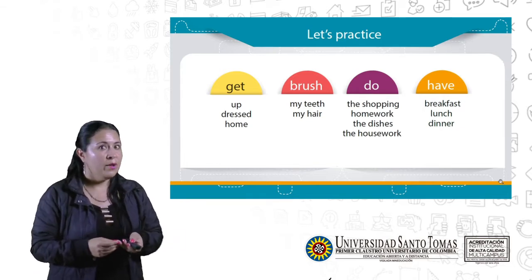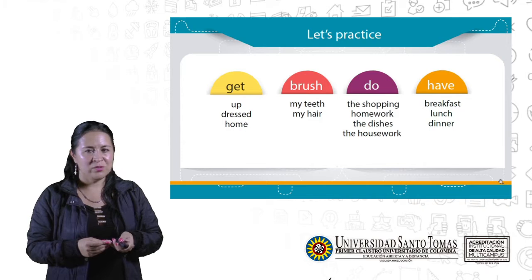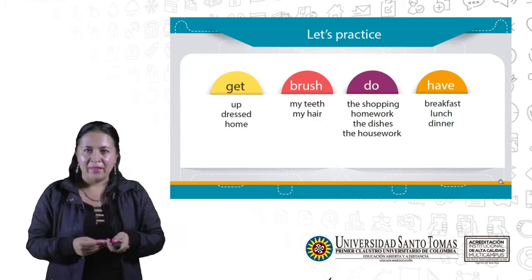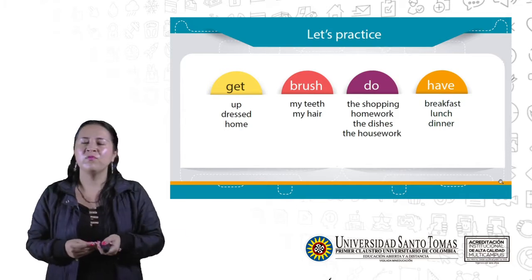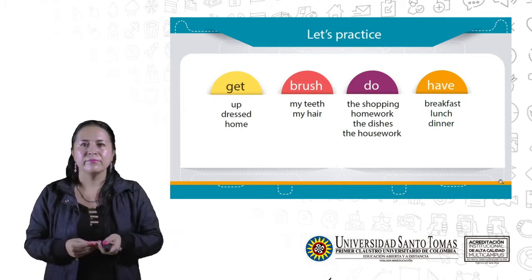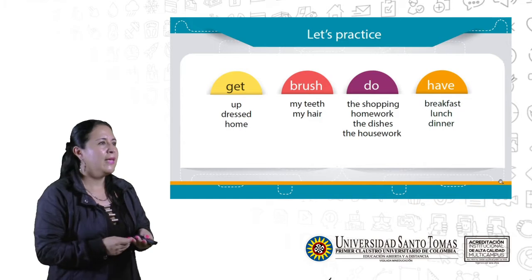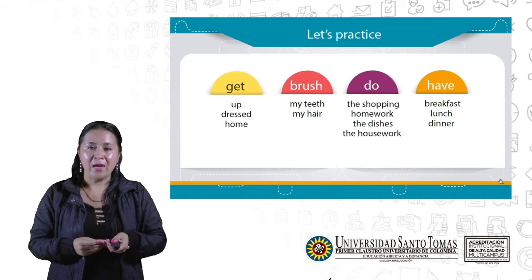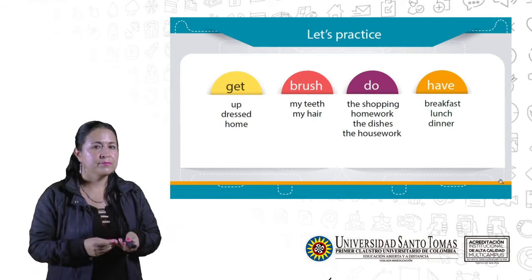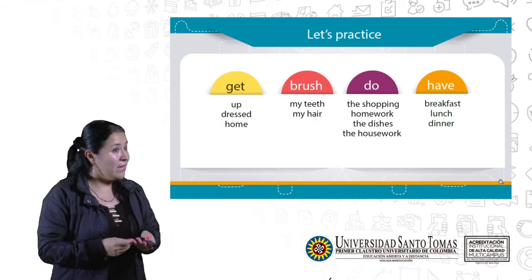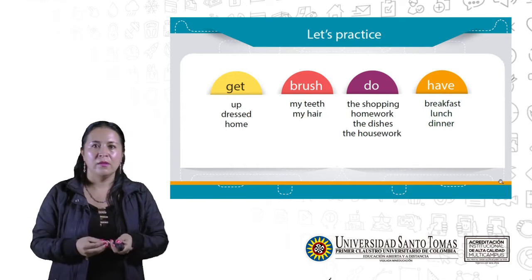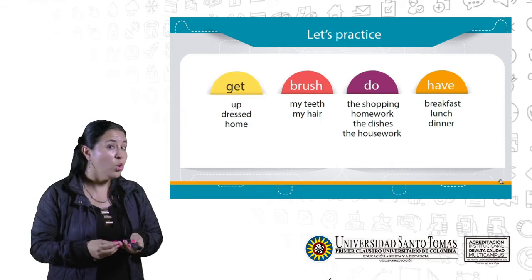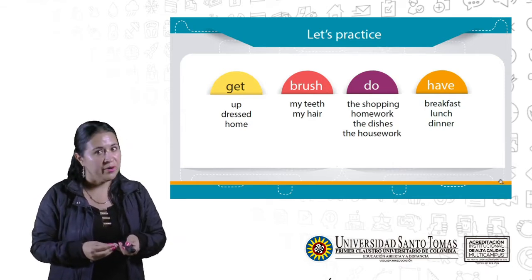We're going to practice now. Let's begin with 'get': get up, get dressed, get home. 'Brush': brush my teeth, brush my hair. 'Do': do the shopping, do homework, do the dishes, do the housework.